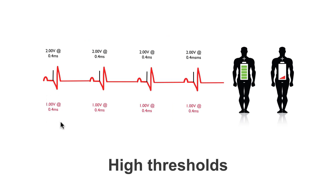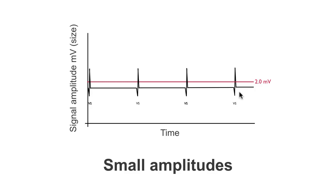Now, quite often by making that small change, we can go back and look at our values again. In this patient, their threshold has returned to a nice one volt at 0.4 milliseconds. This enables us to put the output pulse at two volts at 0.4 milliseconds, and still maintain safe function of the pacemaker without the additional drain on the battery. Two volts at 0.4 milliseconds is a very normal output pulse for a pacemaker, and so this person will have good longevity from their device. We can also see that the amplitude size has improved — before we were just marginally over two millivolts, and now the ventricular signals are much greater than the two millivolts that the ventricular sensitivity is set to. This will put your mind at rest that the pacemaker will continue to function normally.